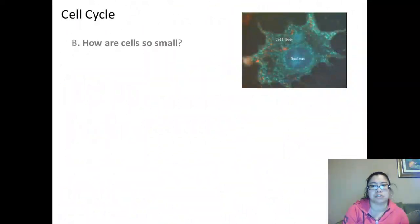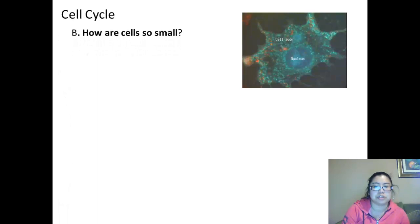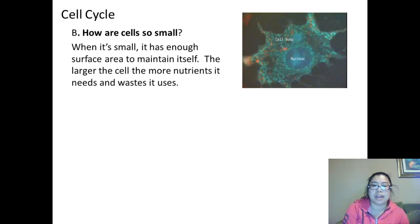Let's talk about how our cells are so small. Here, we have a picture of, I believe, a dendrite. You can see the shape of the cell with its nucleus. When it's small, it has enough surface area to maintain itself.